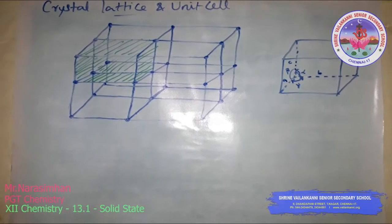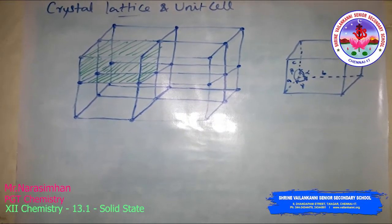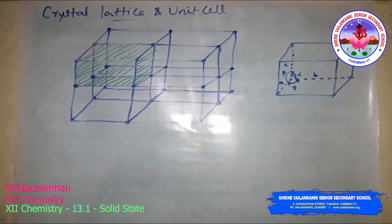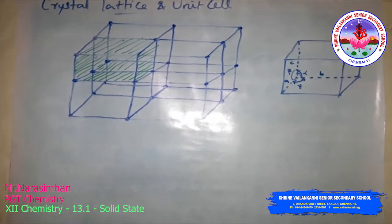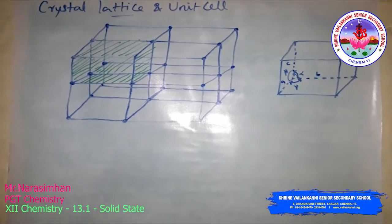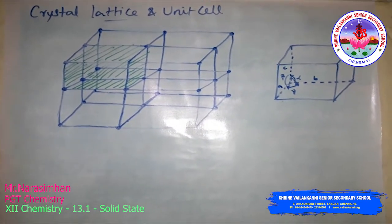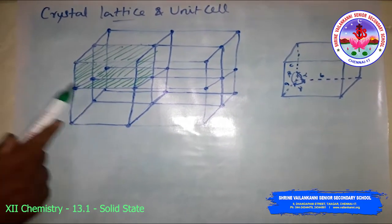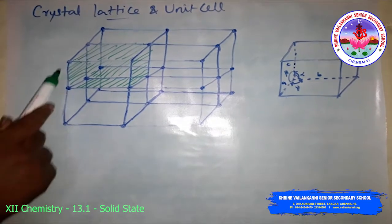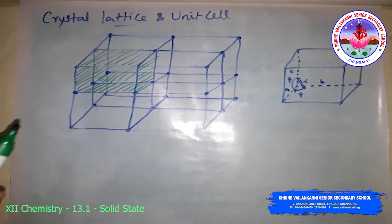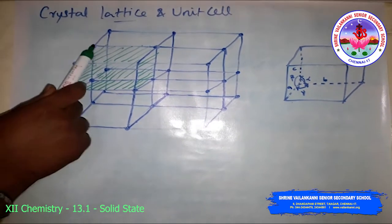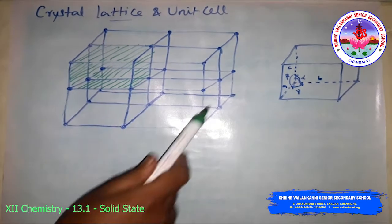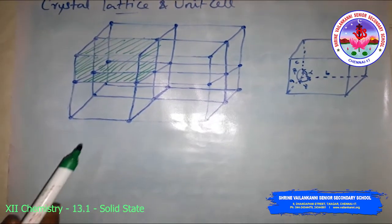Crystal lattice and unit cell. The main characteristic of a crystalline solid is a regular and repeating pattern of constituent particles. The three-dimensional arrangement of constituent particles in a crystal, represented diagrammatically where each particle is depicted as a point, is called the crystal lattice.